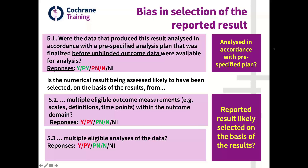For Domain 5, Bias in the Selection of Reported Results, you have five main questions. The first question is: were the data that produced these results analysed in accordance with the pre-specified analysis plan that was finalised before unblinding and the outcome data were available for analysis?